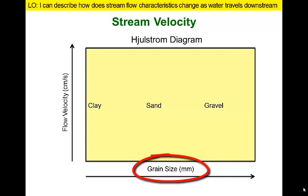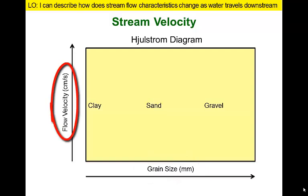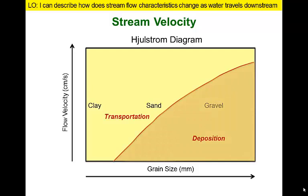First, notice that the x-axis of the graph indicates grain sizes from clay to sand, ranging all the way up to large gravels. The y-axis shows flow velocity increasing upwards. At low velocities, streams can carry clay and sand sized particles but don't move fast enough to transport gravels. Consequently, the lower part of the graph divides into two parts: the left represents velocities sufficient to transport clay and sand, and the right indicates gravels will be deposited if velocities drop below the line.